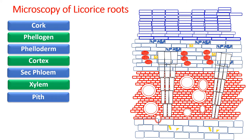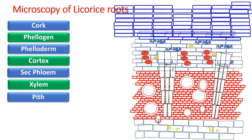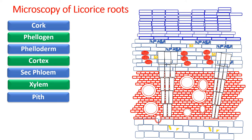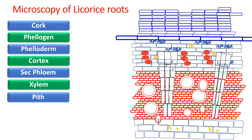As far as microscopic characters are concerned, the root looks very similar to that of Rauwolfia. It has the external cork, which is reddish brown, and the cells are stacked one above the other. Phellogen and phelloderm are present just beneath the cork, arranged in a staggered format, and they are indistinguishable. Most of the anatomical characters are similar to that of Rauwolfia.